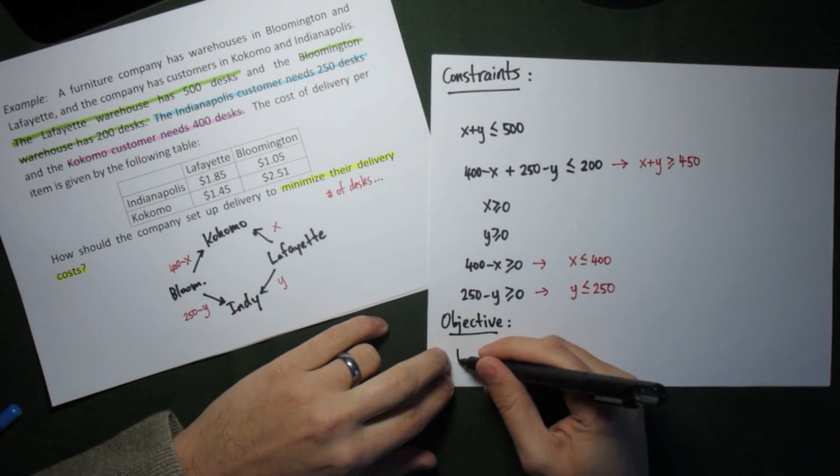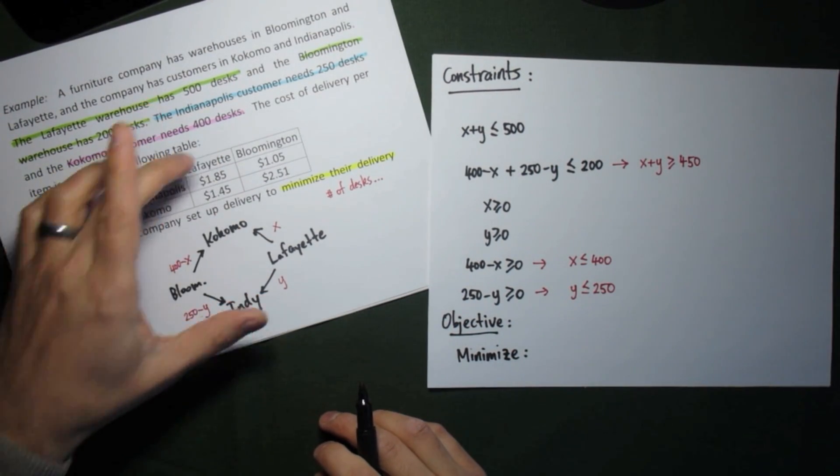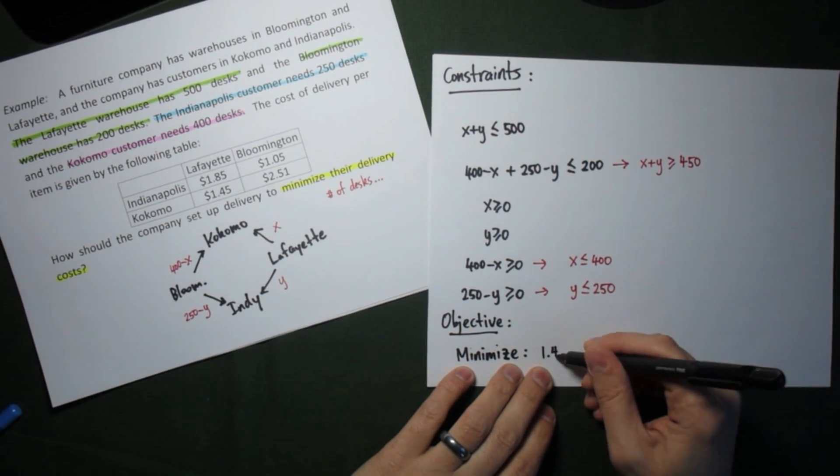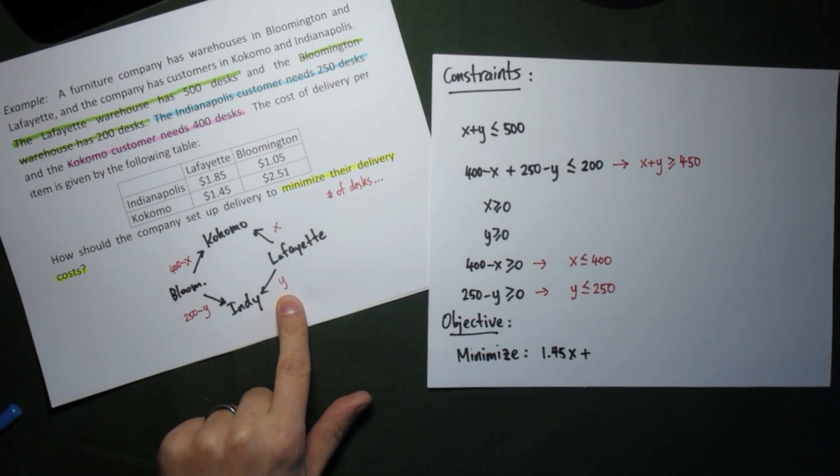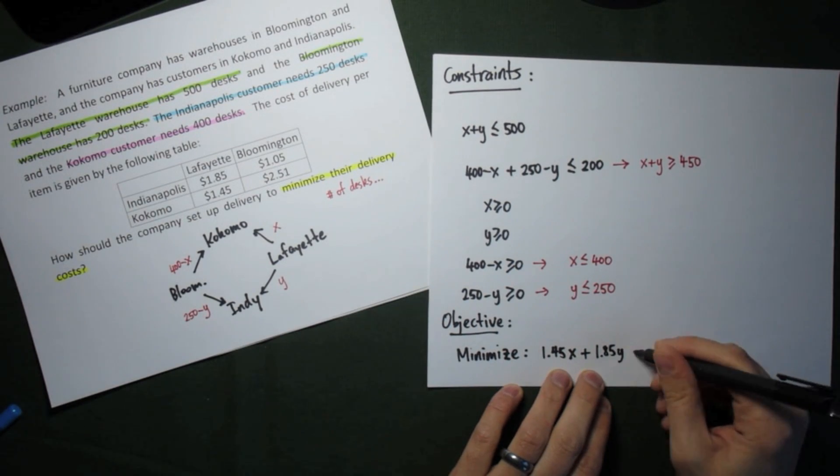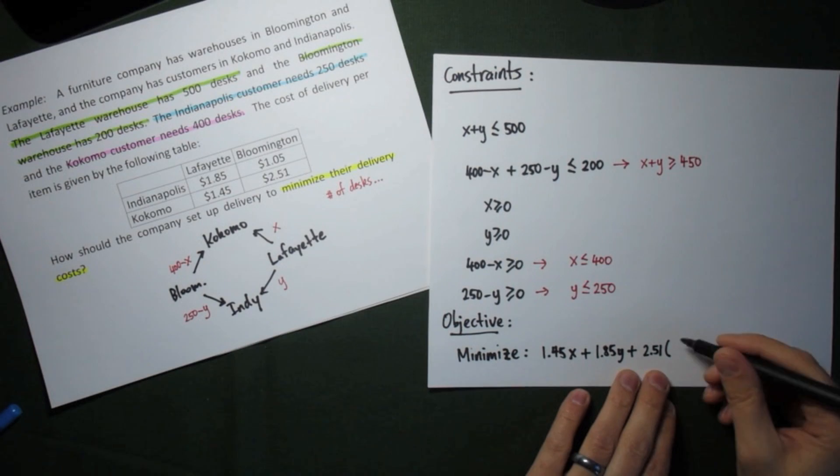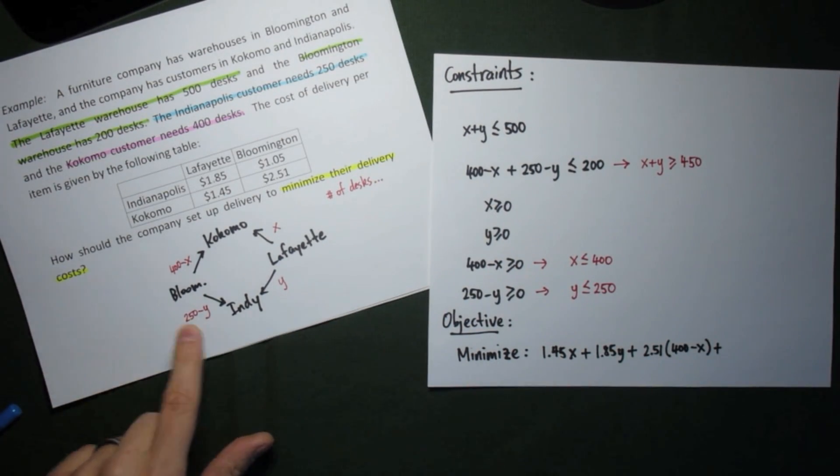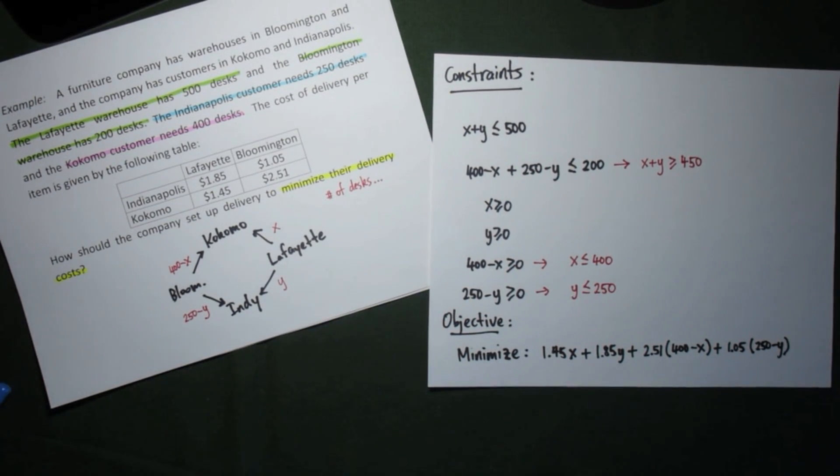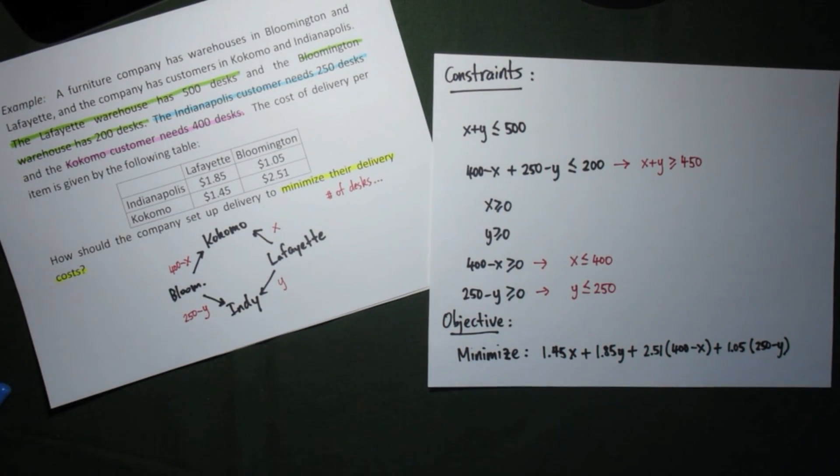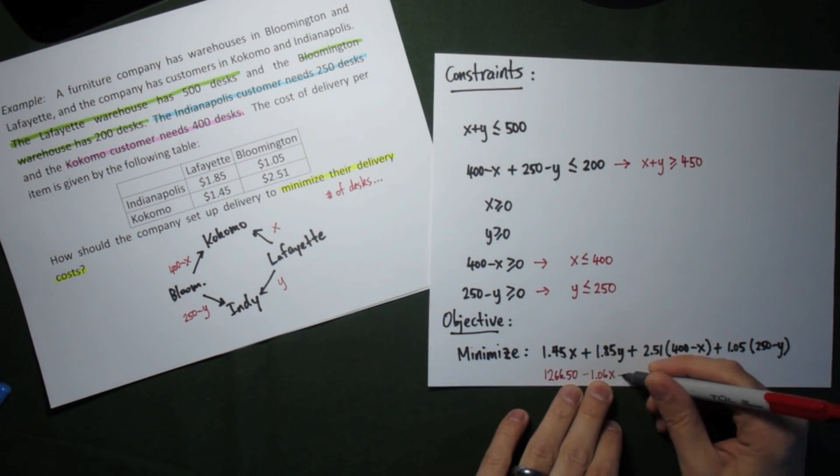Lastly, we need the objective function, and so we're going to minimize the delivery costs, as asked for by the problem. The delivery cost is going to be based on the table that we have, and each of the variables. So, we construct our delivery cost. All four variables work exactly the same way, and notice that you use the full variables for the desks shipped out of Bloomington. So, $2.51 times 400 minus x for Bloomington to Kokomo, and the same for Bloomington to Indianapolis. Lastly, we simplified the objective function so that we have a nice function to work with, easy to plug our vertices in once we find our vertices.